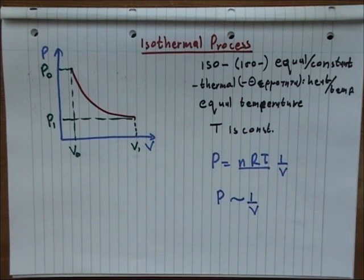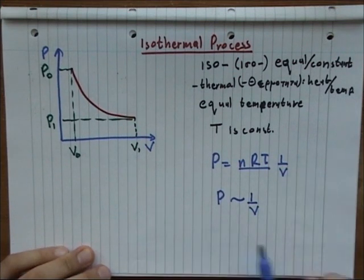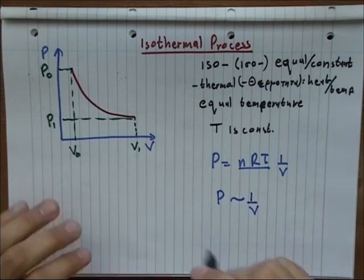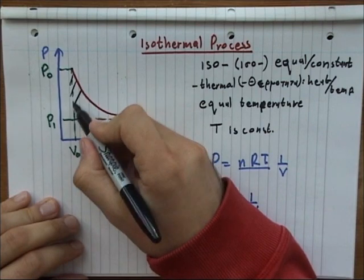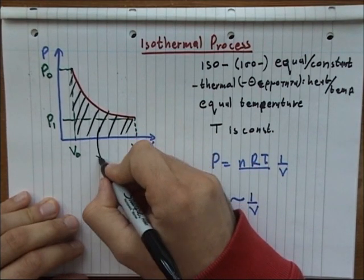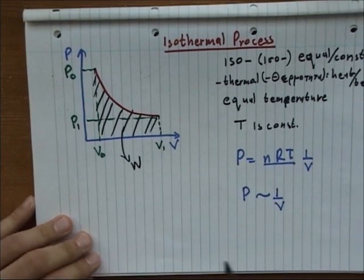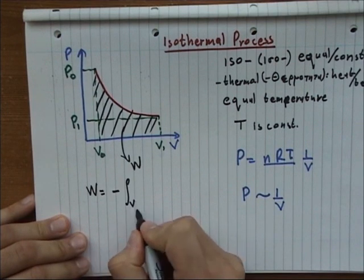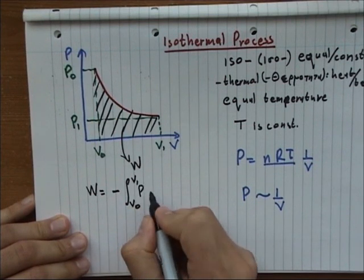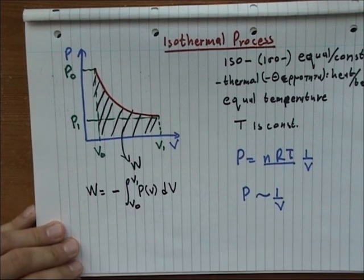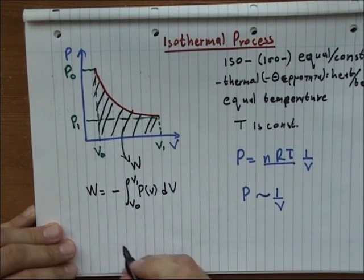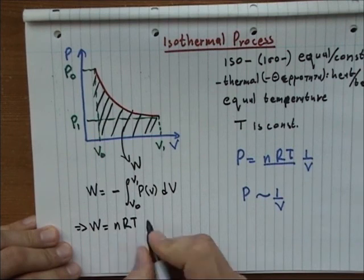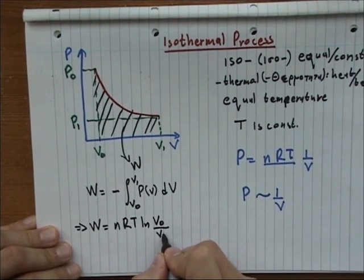If we are asked to find the work being done by the gas, we simply take the area underneath our curve. This is the work, which we can find by minus the integral from V0 to V1 of P of V dV. This is the definition of work, and we can find that the work is nRT ln V0 over V1.